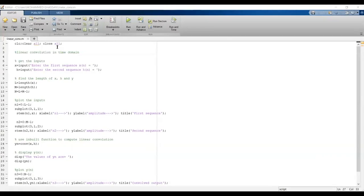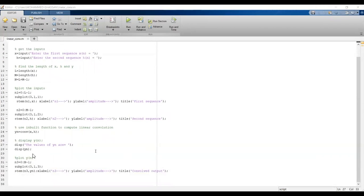We have to use the inbuilt function to compute the linear convolution. In MATLAB, we have a function called conv. We write conv(x, h), passing the input followed by the impulse response. After getting the output, we display it. We plot it using subplot(3,1,3), three rows, one column, pointing the third plot. Use stem(n3). For n3, we take 0:n-1, where n is l plus m minus 1. Assign the x label within brackets, y label, and title.